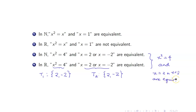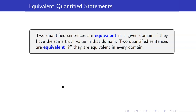If we have equivalent open sentences, that means we can substitute one for the other whenever we are using them in quantified statements. Two quantified statements are equivalent in a given domain if they have the same truth value in that domain, and they are said to be equivalent if and only if they are equivalent in every possible domain.